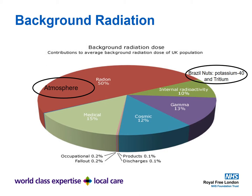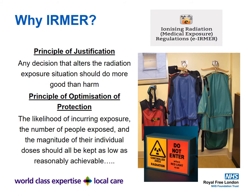There is indeed background radiation everywhere we go. The vast majority — about 50% — is atmospheric radiation, otherwise known as radon. You'll also see medical background radiation, occupational radiation such as those working in the nuclear industry, fallout, cosmic radiation, gamma radiation, and internal radioactivity. Brazil nuts actually contain radioactive potassium-40 and tritium — which may be a reason I don't eat nuts very often.